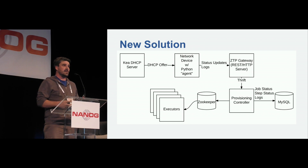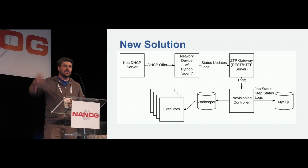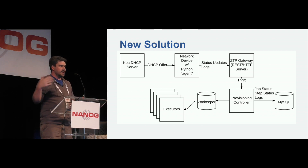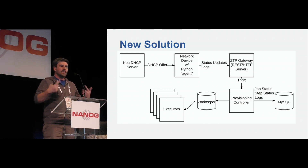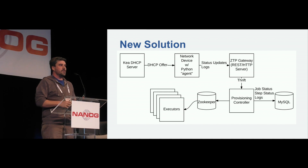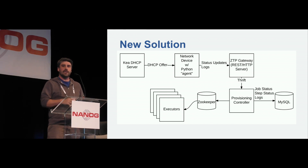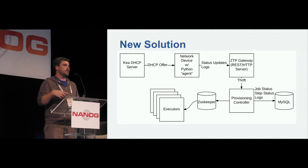In that DHCP offer message, instead of providing a configuration to be applied to the box, we actually download a Python agent — a little Python script. The reason we do this is there's not a whole lot of visibility when running ZTP on a box. You plug it in, it runs stuff, and if you're plugged into the console you can see logs scroll by, but that defeats the purpose. So we have this agent that looks at logs from the ZTP process, streams them off to the gateway, finds out exactly what files need to be downloaded, what config needs to be applied and in what order, and downloads and installs any needed RPMs or packages.